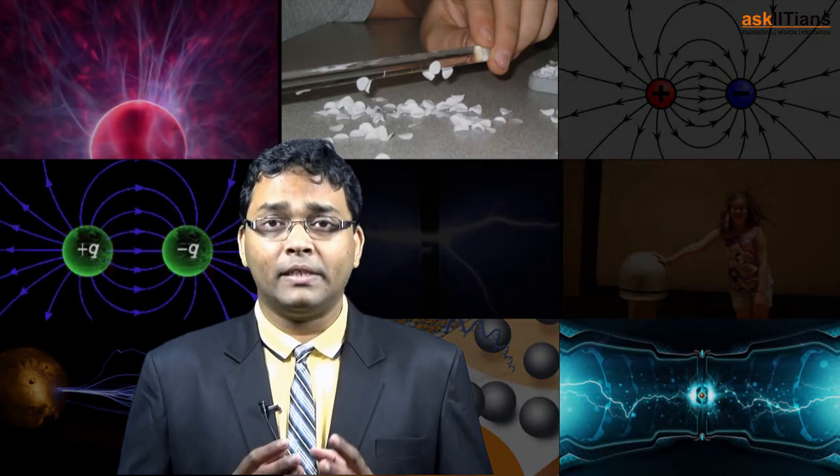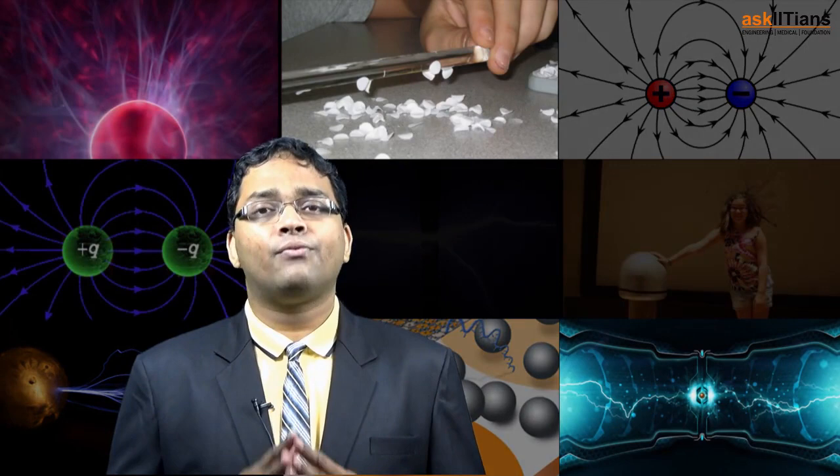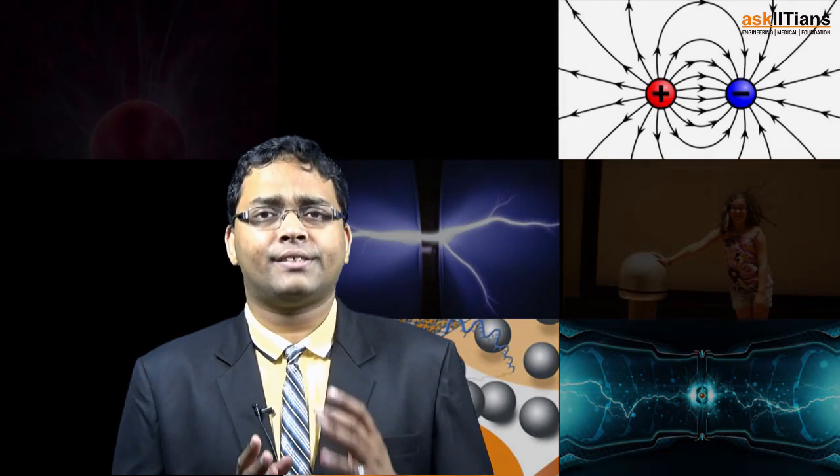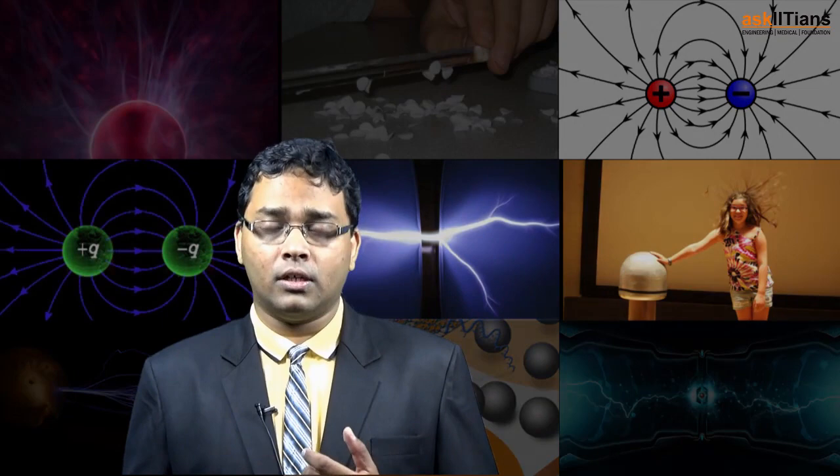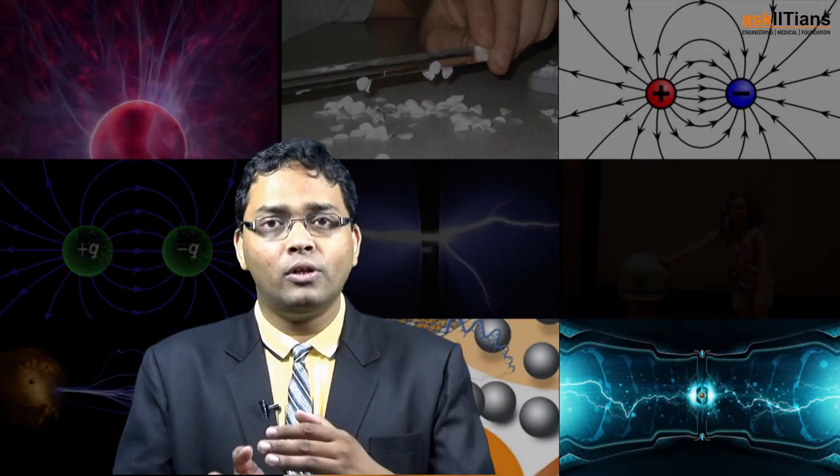We learned about what exactly is an electric dipole, and what electric fields can be found from it — at the axial position and the equatorial position. When you place the electric dipole in an external electric field, it tries to align itself along or opposite to the direction of the applied electric field, resulting in the formation of a torque. Using this torque, we can find how much work is being done, and that amount of work done is stored in the form of potential energy.